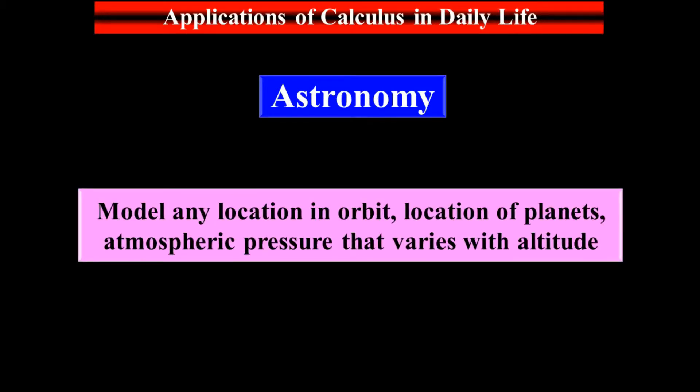In astronomy, we use it to model any location in orbit, location of planets, and atmospheric pressure that varies with altitude. If you want to locate something in an orbit, we use calculus for location of planets.